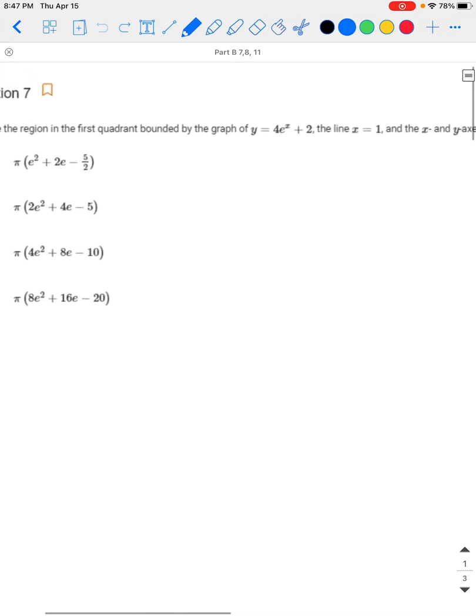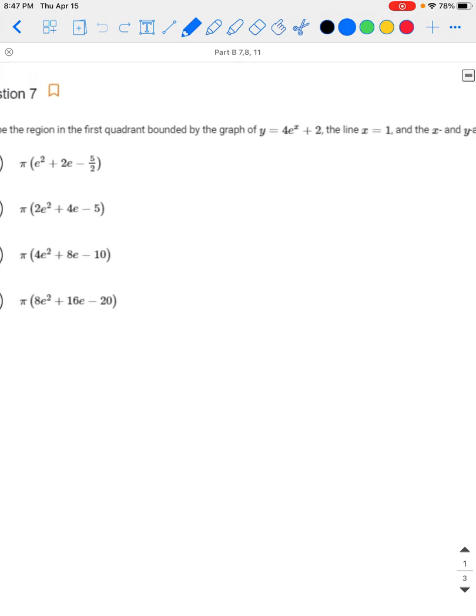Let's attempt to make a rough sketch of this curve. So 4e^x is going to have the look of an exponential function, and plus 2 means it's shifted up by 2 units, something vaguely like this. We have x = 1, so we'll call that 1.